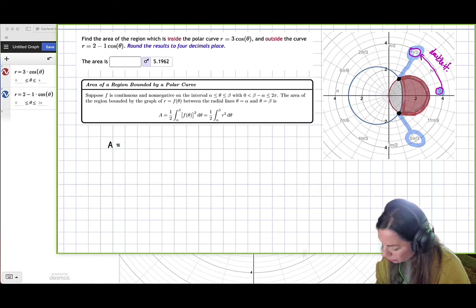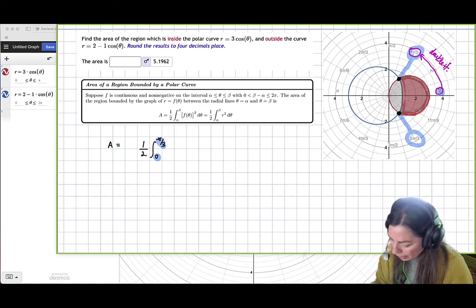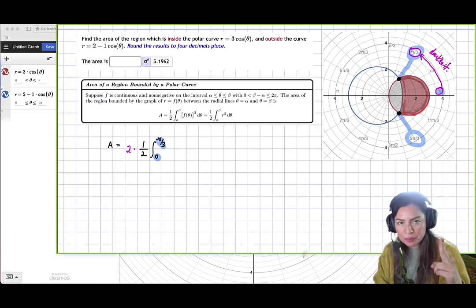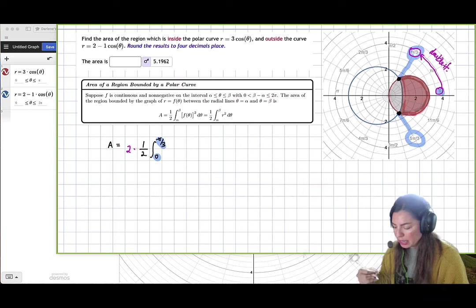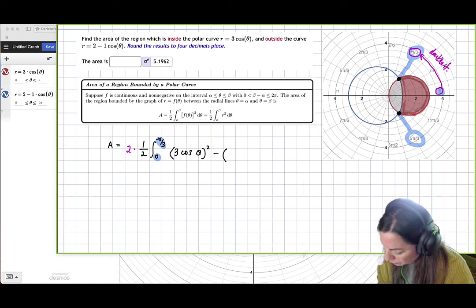Here let's set it up, we get area is equal to one half integral from that 0 to pi over 3. But we have to double it because we have two pieces of the red, right, of right minus left. So our right is going to be 3 cosine theta squared minus the left, which is 2 minus cosine theta squared d theta.